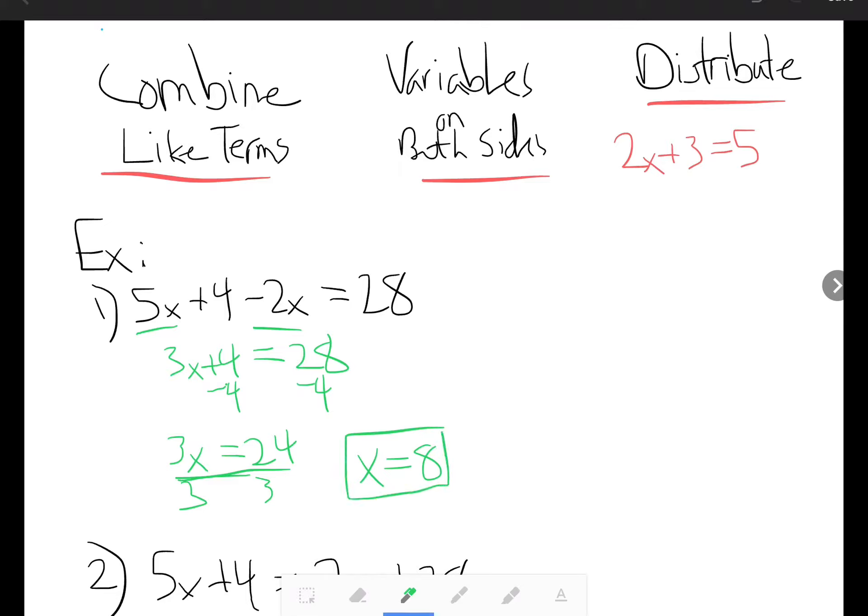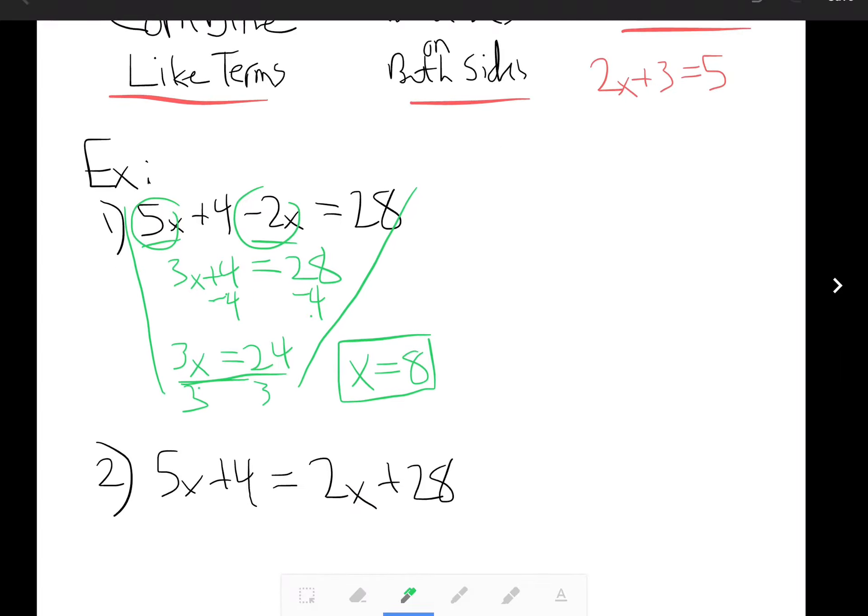Now notice how I kind of have this funnel of work. Like that's one thing I really want to stress is that you kind of keep a narrative of your work as you keep going here. So here first step I combined, then I kind of went down and then I did my inverse operations by subtracting 4 from both sides, then dividing by 3. Sometimes I see students putting their work all over the place and then they end up getting a little bit confused about what it is they have done and what they still need to do. Alright, next one.